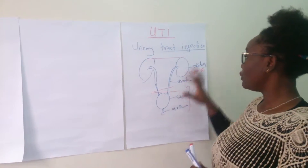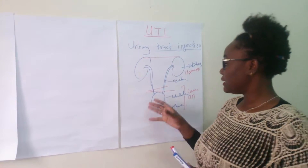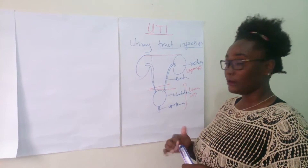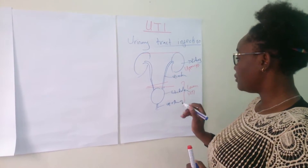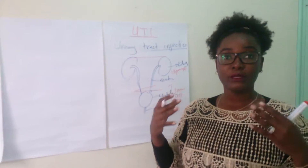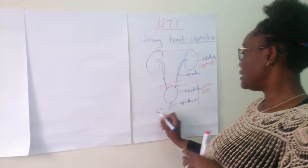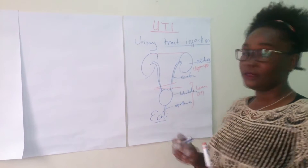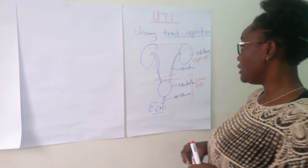Now that we've identified the upper and lower parts, let's start discussing what causes UTI. The organism that has been implicated in causing UTI is E. coli. It's a Gram-negative bacteria called E. coli that causes most of the UTIs.